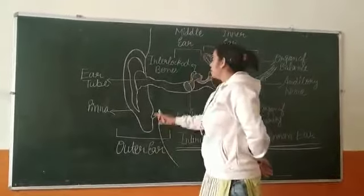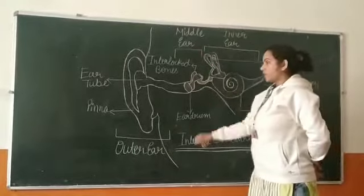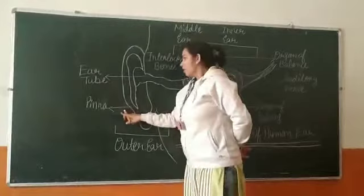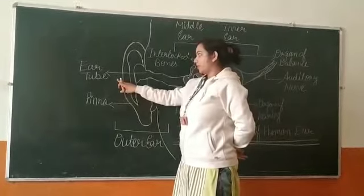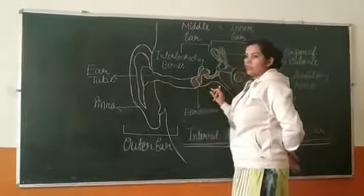One is outer ear, second is the middle ear, and third is the inner ear. Coming to the outer ear, the outer ear mainly consists of the skin which is known as pinna and the ear tube. The ear tube will enter from the outer ear and enter inside to the eardrum.